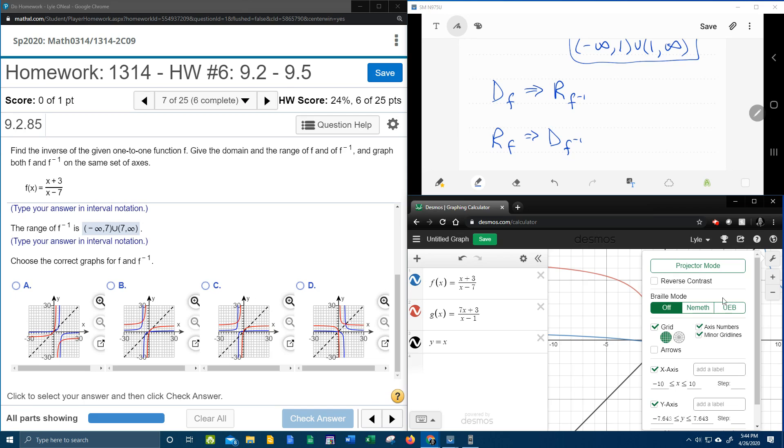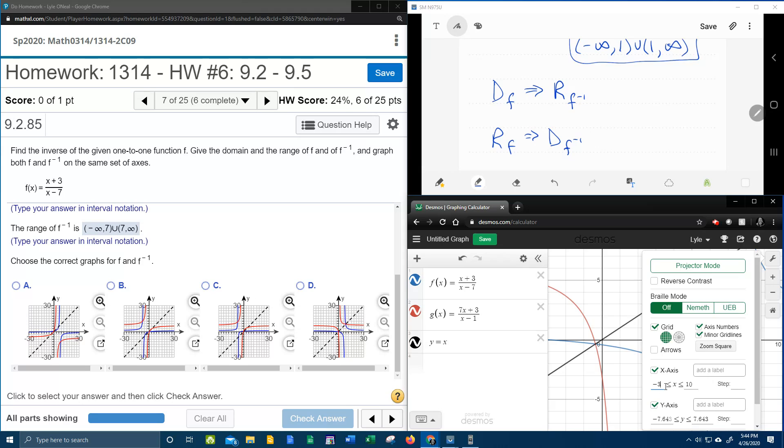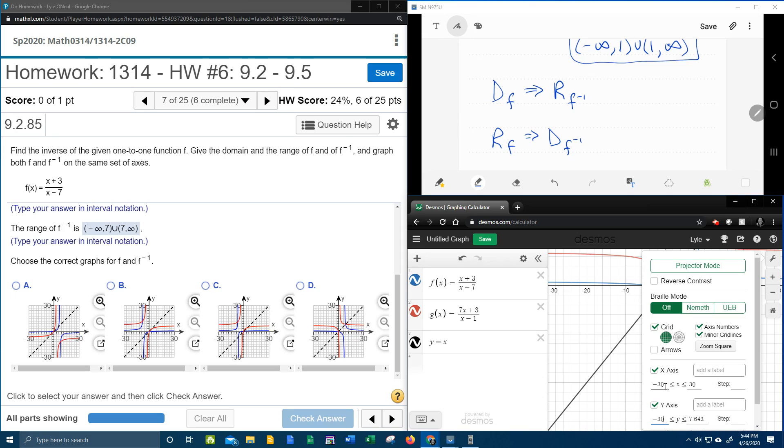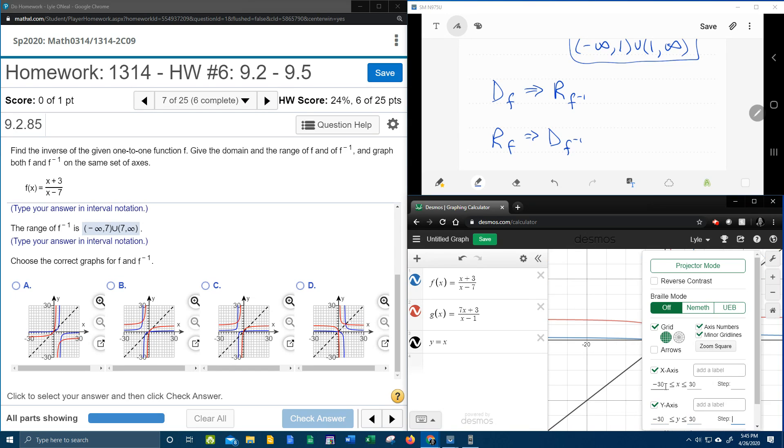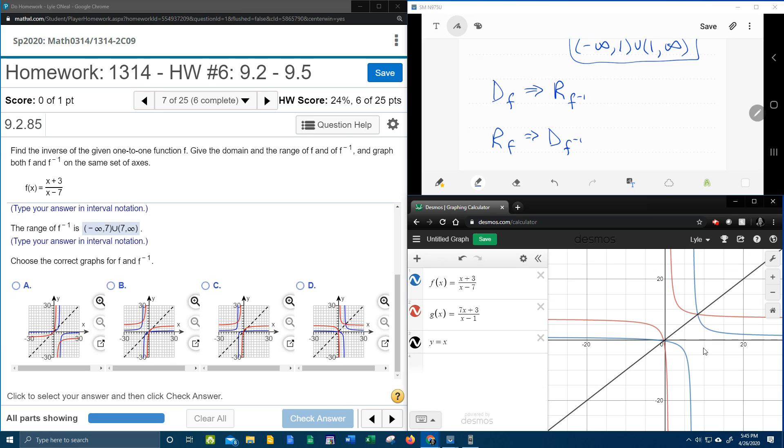Negative 30 to 30, and negative 30 to 30. And then which one of these graphs looks the same?